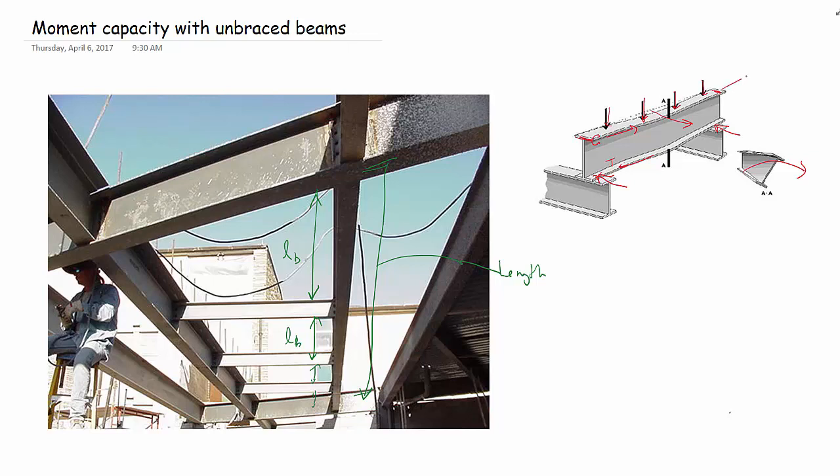A column, if it has force in it, has a tendency to buckle where it's unbraced. When we put brace points in, so if we were to take this beam and actually brace it, say with a deck or something like that, the beam can then develop its full moment capacity. Let's start with a fully braced member.